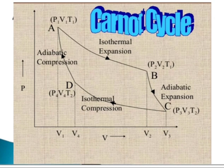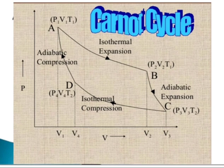At point A, pressure is P1, volume is V1, and temperature is T1. At point B, pressure is P2, volume is V2, and temperature is T1. At point C, pressure is P3, volume is V3, and temperature is T2, because the system is cold there.